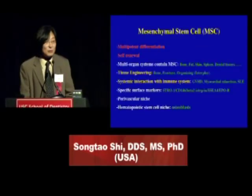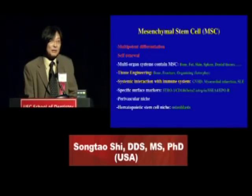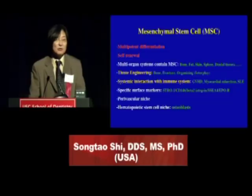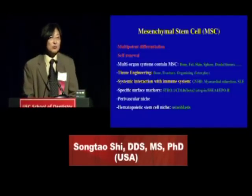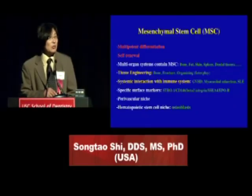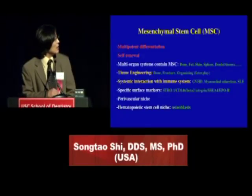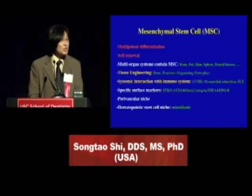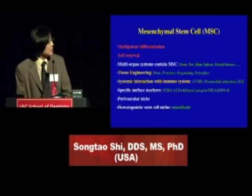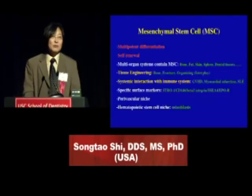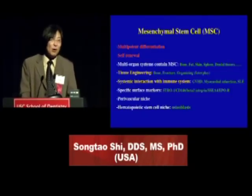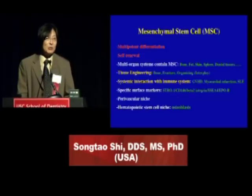I want to give a basic background about mesenchymal stem cells. I believe everybody knows about stem cells, but how we characterize stem cells — we can use two key criteria no matter what stem cells we talk about: one is multi-potential differentiation, and the other one is self-renewal. What is different about mesenchymal stem cells is that we now know we can use them for tissue engineering to generate bone, teeth, and maybe other tissues and organs.